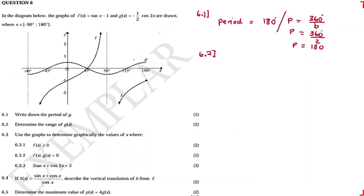Now we answer 6.2: write down the range of G. We are still on the cosine graph. The range is all possible y-values of the function. Since the function has coefficient A — which in this case is one half — we get a negative half and a positive half. The value of A determines the range.